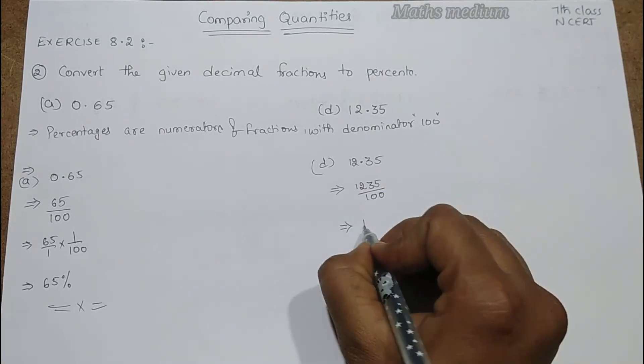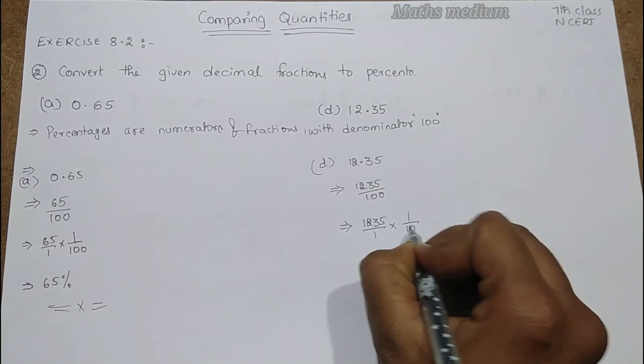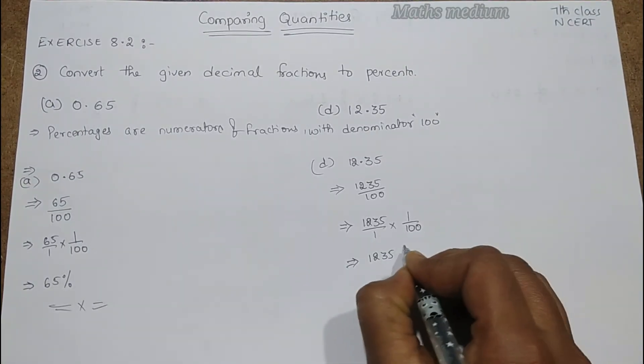So now 1235 by 1 into 1 by 100. We can write it as like this. Now 1235 percentage.